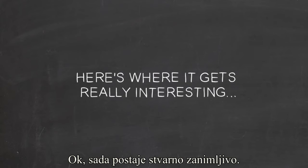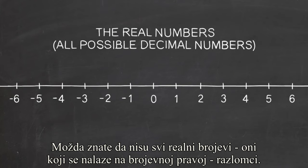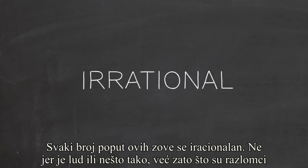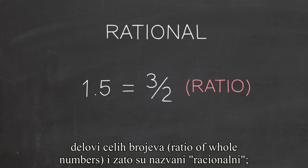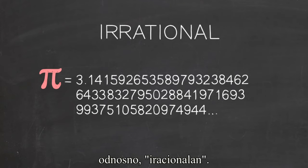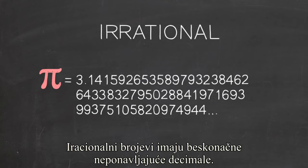Okay, here's where it gets really interesting. You may know that not all real numbers, that is, not all the numbers on a number line, are fractions. The square root of 2 and pi, for instance. Any number like this is called irrational, not because it's crazy or anything, but because the fractions are ratios of whole numbers and so are called rationals, meaning the rest are non-rational, that is, irrational. Irrationals are represented by infinite, non-repeating decimals.